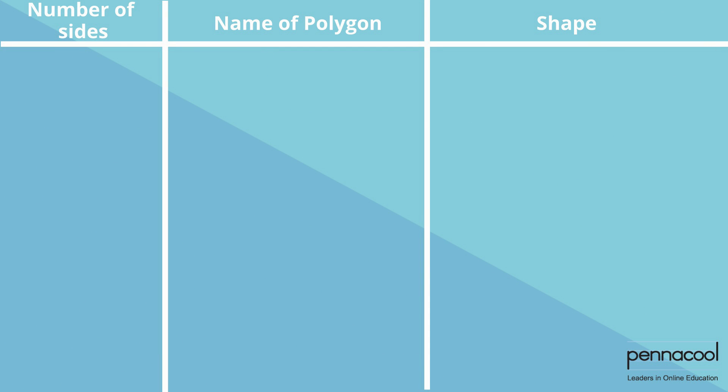All polygons with more than four sides have similar names. The first part of the name relates to the number of sides, while they all end in GON. For example, PENTAGON. PENTA means five, while GON tells us that the shape is a polygon.